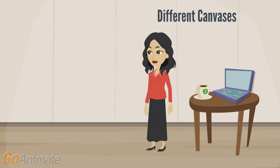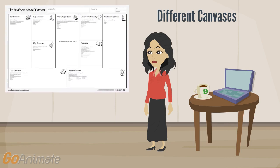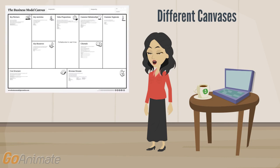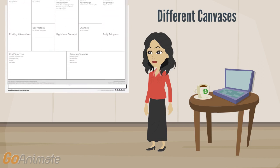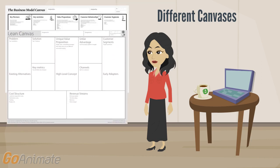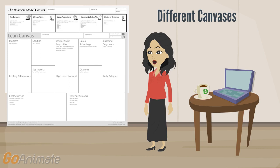There are canvases for different purposes. Business Model Canvas by Alex Osterwalder to describe, discuss, challenge, and improve your business. Another canvas is the Lean Canvas by Ajmoyer. He says it is problem-oriented and entrepreneur-focused, to be used in startups.